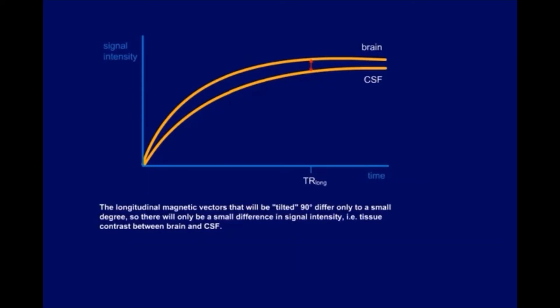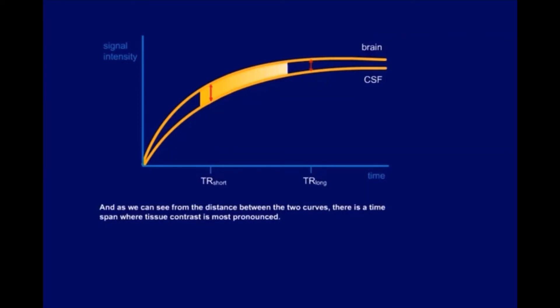If we however send in the second pulse after the shorter TR short, the difference in longitudinal magnetization is rather large, so there will be a better tissue contrast. And as we can see from the distance between the two curves, there is a time span where tissue contrast is most pronounced.